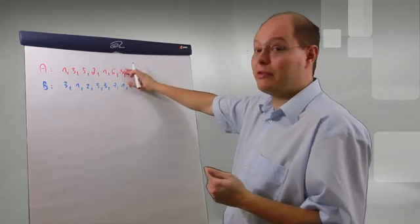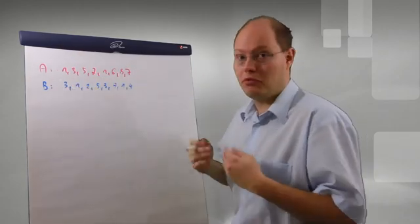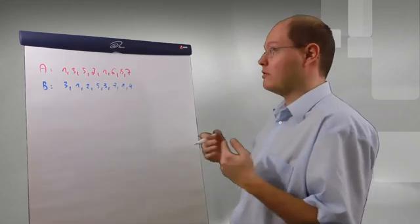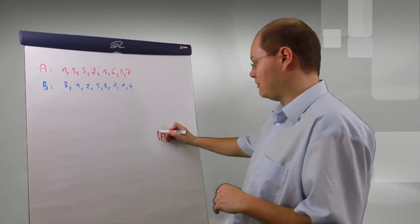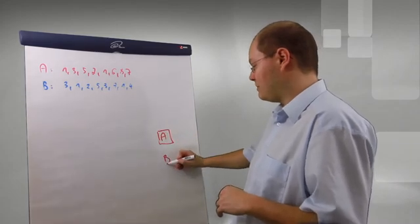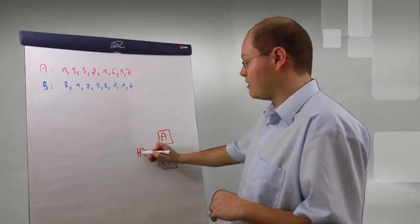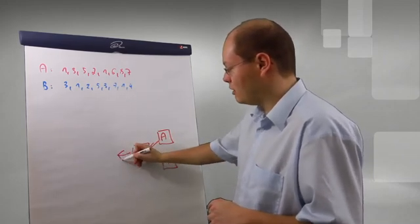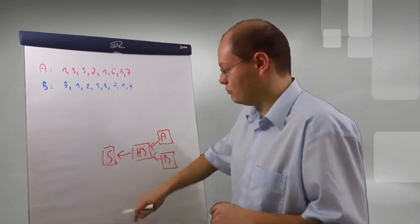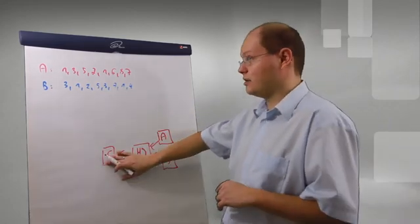As you can see, we have again two tables, table A, table B, and both tables are joined now with a hash join, and the result goes to another operator in the execution plan as our select operator.